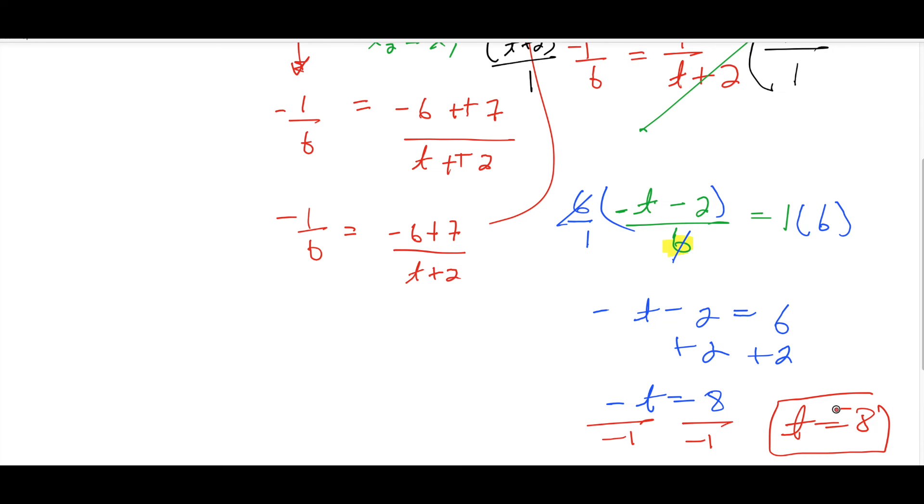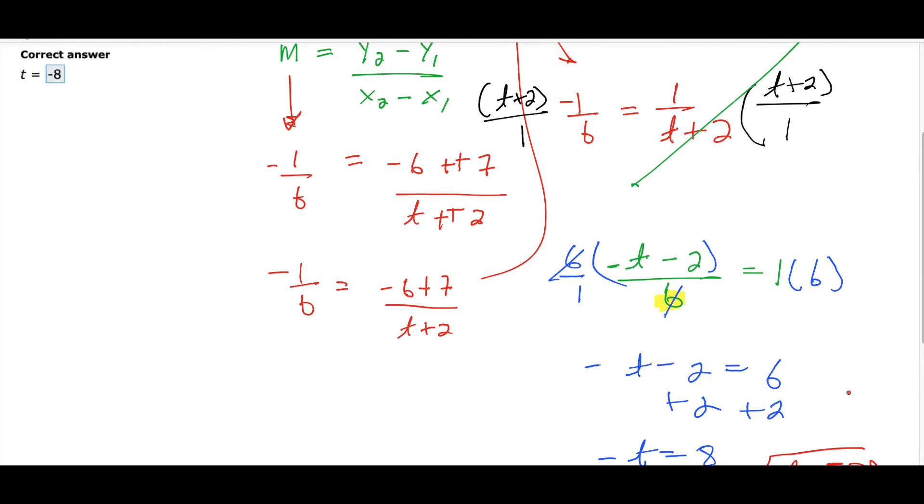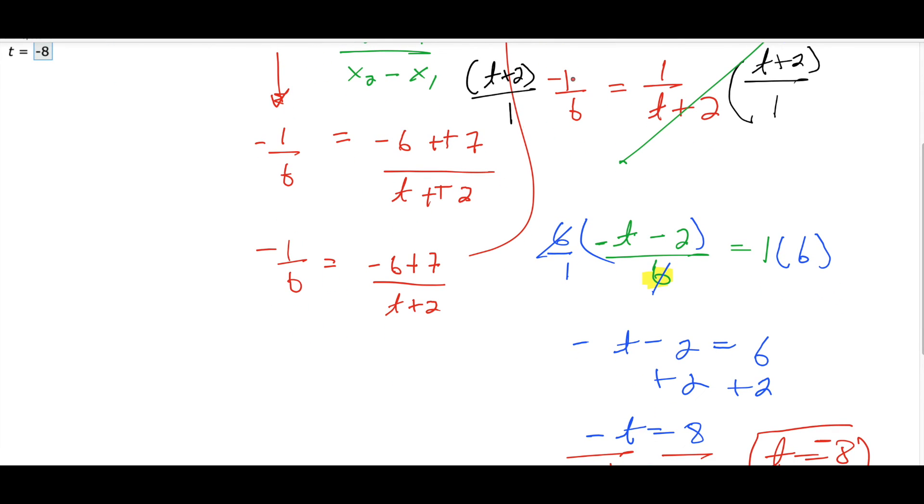-8. The other way which would be easier is at this point right here, you get -1 over 6. But remember, this is only when you have one chunk equals one chunk. You can't have three things. So -1/6 equals 1 over t plus 2.